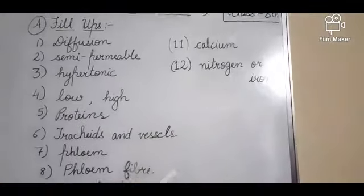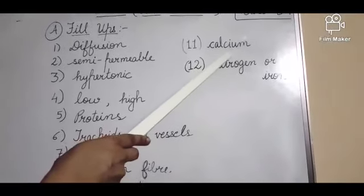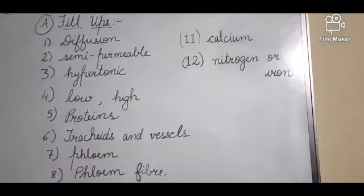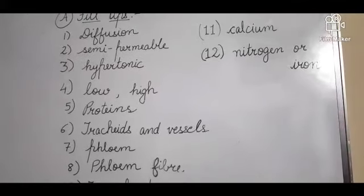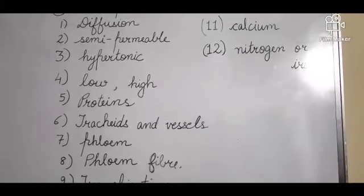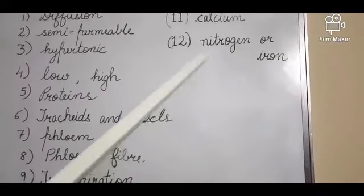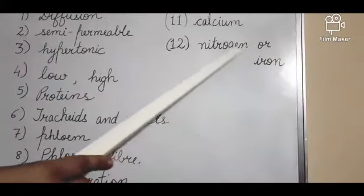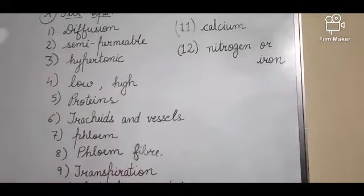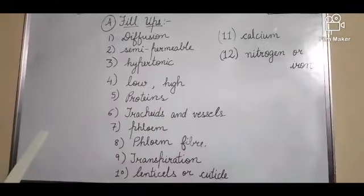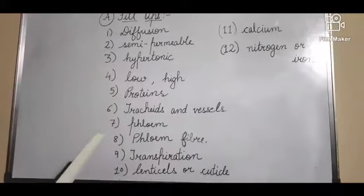Then name blank, a macronutrient. Calcium is one of them. You can write potassium, magnesium, phosphorus, nitrogen, sulfur - any option. Twelfth is: lack of chlorophyll in the leaves may be caused due to the deficiency of nitrogen or iron. Nitrogen ya iron ki deficiency jab kami ho jati hai plants me, toh leaves yellow color ke ho jate hai. That process is called chlorosis, meaning inadequate chlorophyll is present in the leaves. So these were the fill-ups.